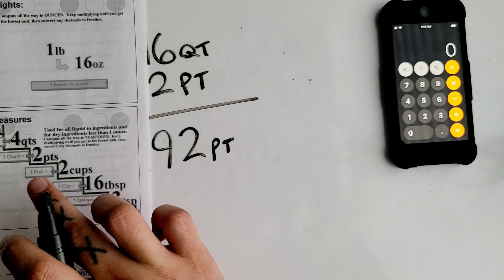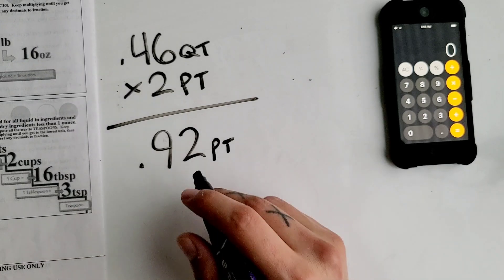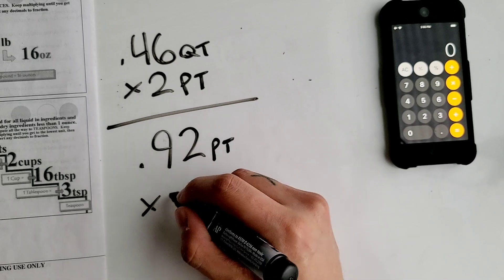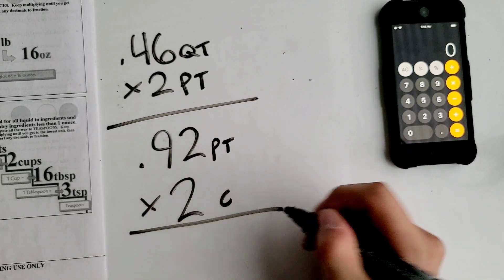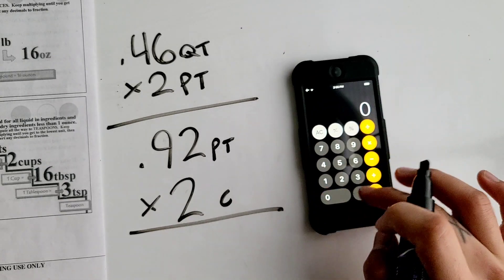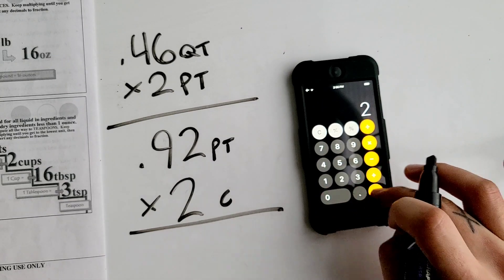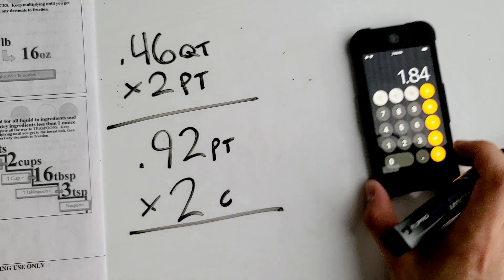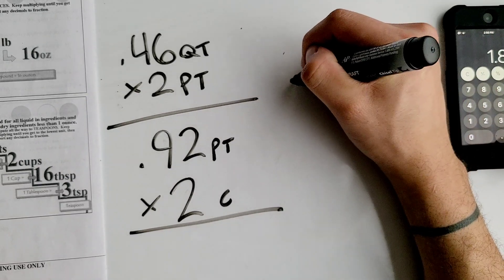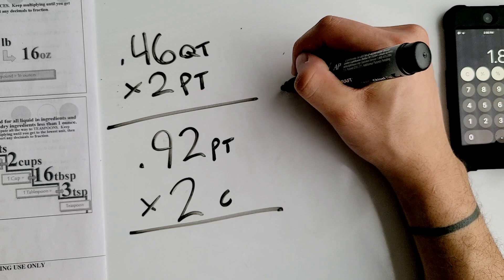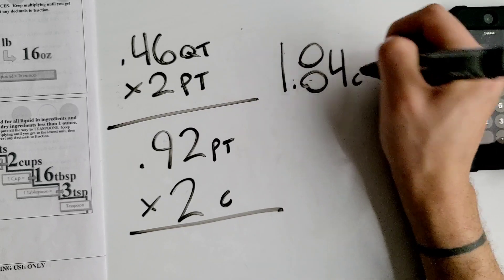We keep going down. From pints to cups, we multiply by 2 cups. So 0.92 times 2 equals 1.84 cups.